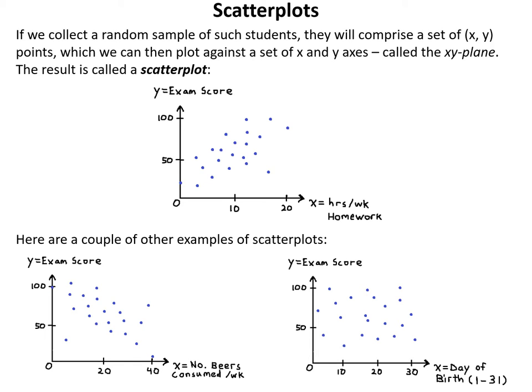If we collect a random sample of such students, they comprise a set of (x, y) ordered pairs which we can plot against x and y axes — the xy-plane. The result is called a scatter plot. A typical scatter plot comparing y equals exam score with x equals hours per week doing homework is shown, with each student represented by a single blue point.